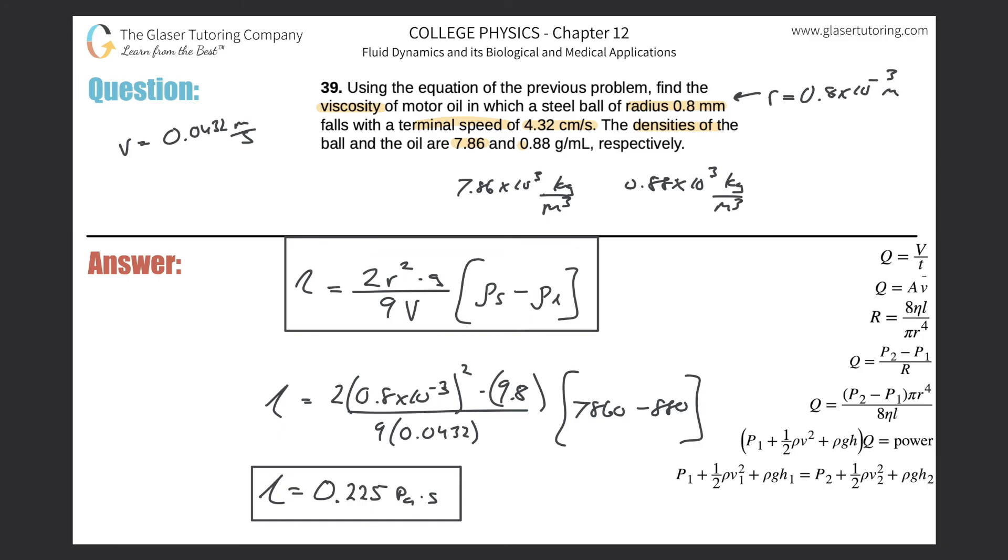Now, just looking back, I usually don't care, but I'm just thinking about it now. We have only one sig fig here in terms of the radius. So I guess technically the answer would be 0.2. But whatever, you know how I feel about sig figs.